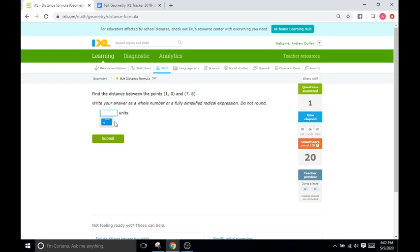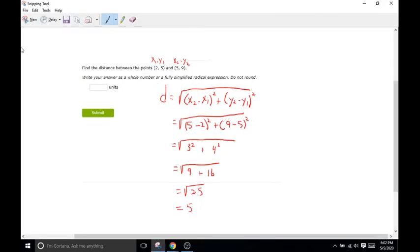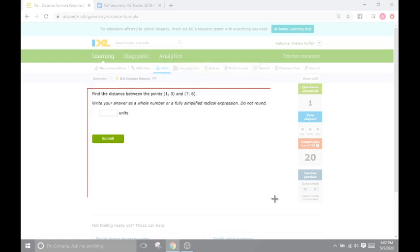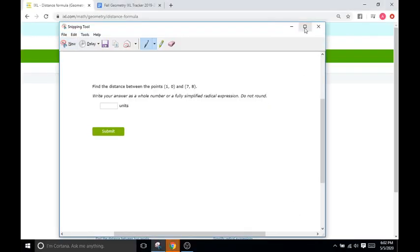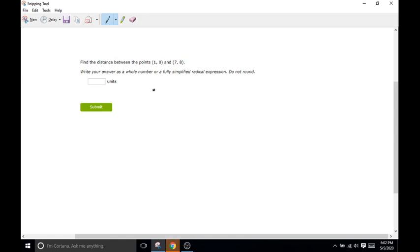Wonderful. Okay, next problem. Again, we're going to use our distance formula for these two points. D equals the square root of x2 minus x1 squared plus y2 minus y1 squared. So now we will label the points. So we'll do x1 comma y1 and then x2 comma y2.